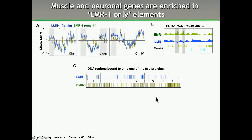We started by doing DAM-ID on entire animals, comparing the profiles of Lamin and Emerin. Across three different chromosomes the profiles are very similar. However, zooming in we started realizing there are regions where you find binding to Emerin but no association with Lamin. Looking genome-wide, we find around 340 what we call Emerin-only elements.